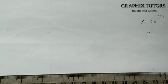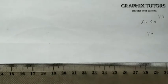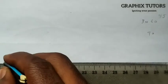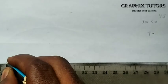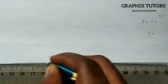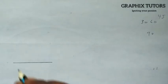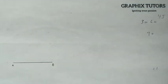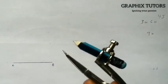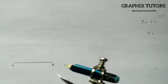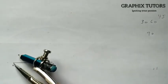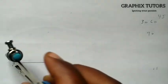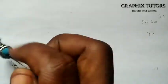Let's start with 60 degrees first. If we want to draw an angle of 60 degrees, you draw a baseline using your T-square. Call this point A and point B. At any given radius — say 10 millimeters — you place your compass at point A and draw a semicircle.